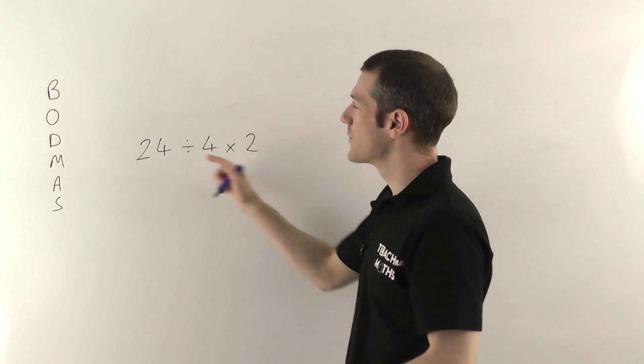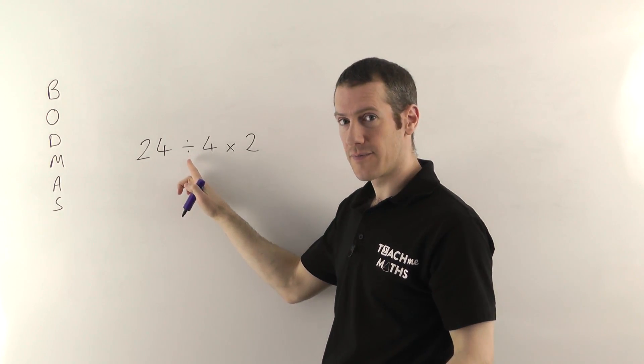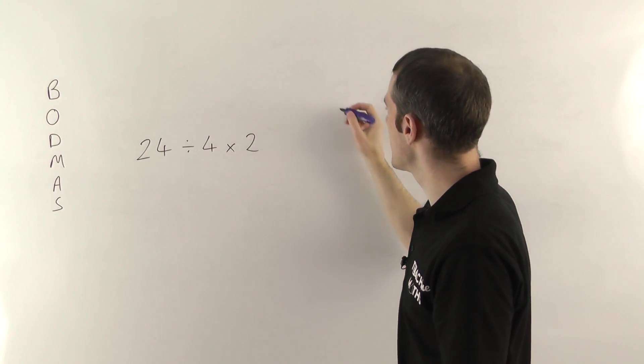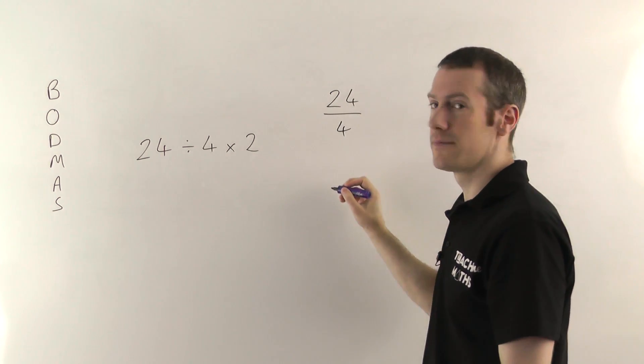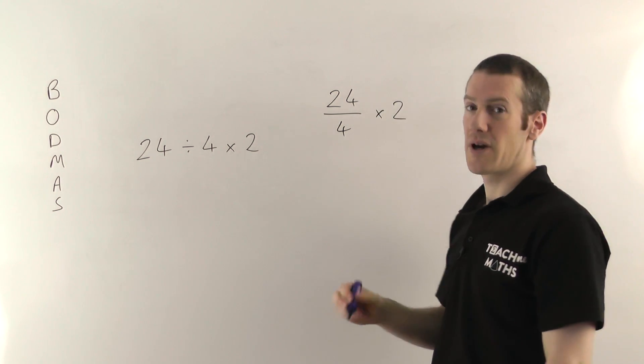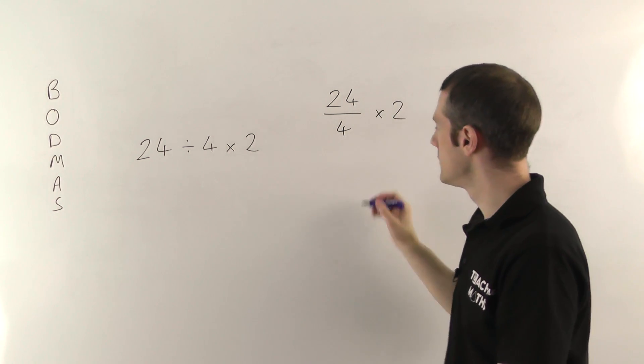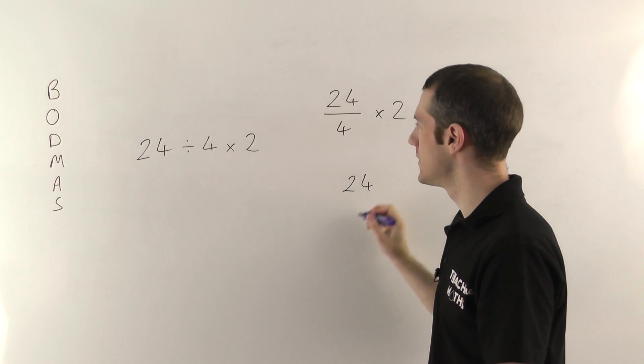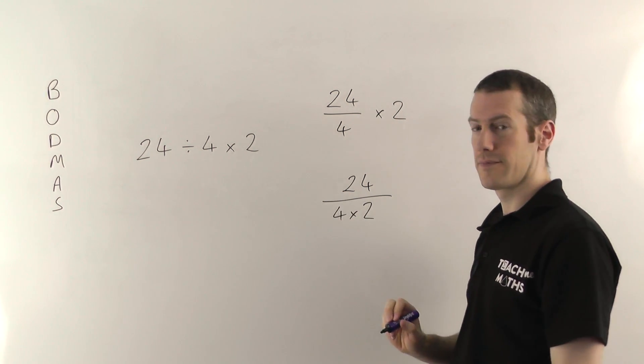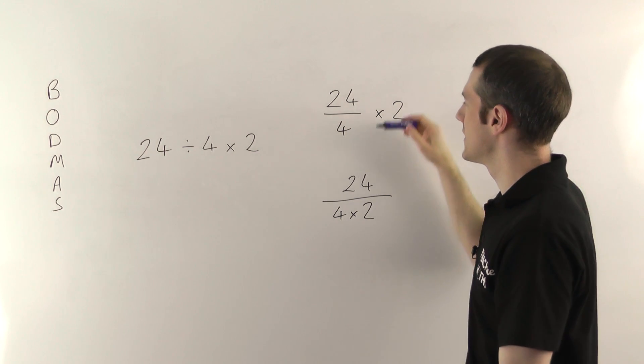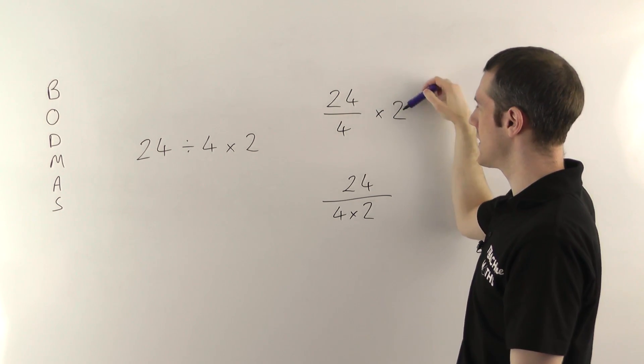In algebra you never have that problem. And the reason is because we always would write division with a fraction. So either you're saying it's 24 divided by 4 and then times that by 2. Or you're saying it's 24 divided by 4 times 2.